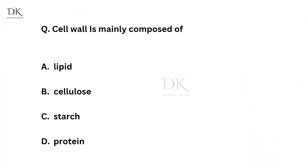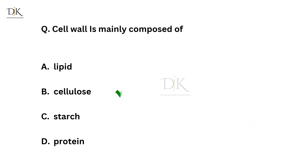Cell wall is mainly composed of? Right answer is cellulose.